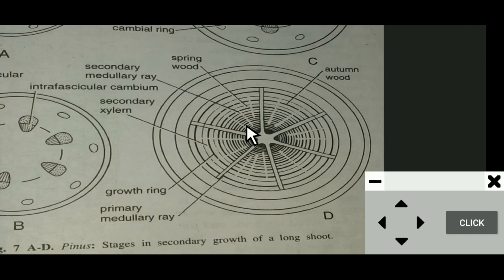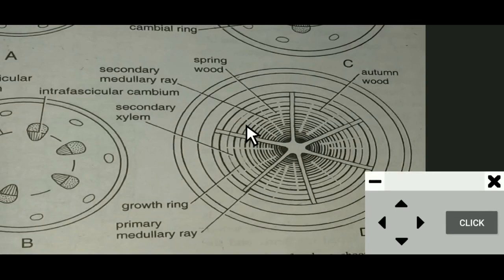Secondary xylem and secondary phloem are formed every year by the cambium ring. The xylem ring formed in a year is differentiated into spring wood and autumn wood. In autumn, there is leaf fall and less need for water and nutrient translocation, so narrow tracheids are formed. In spring, new leaves and branches emerge requiring more translocation, so broad tracheids are formed.